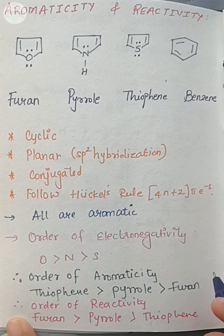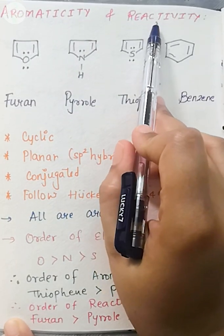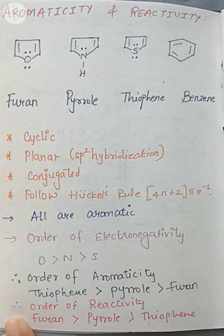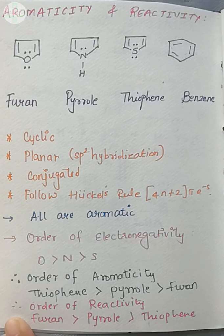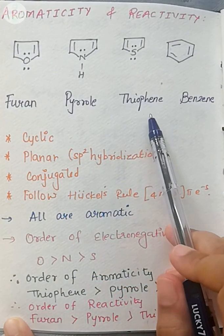The next topic we are going to learn in heterocyclic chemistry is aromaticity and reactivity. Here you have to compare three heterocycles: furan, pyrrole, and thiophene.